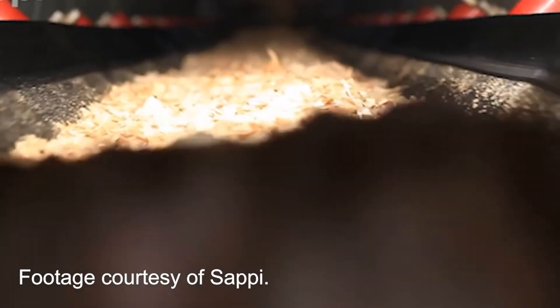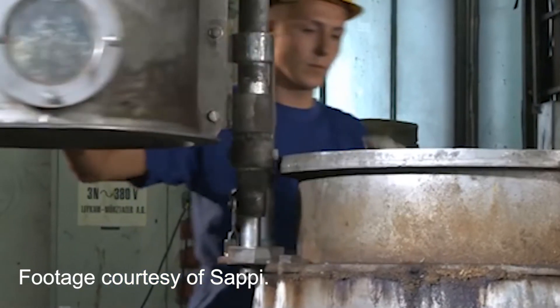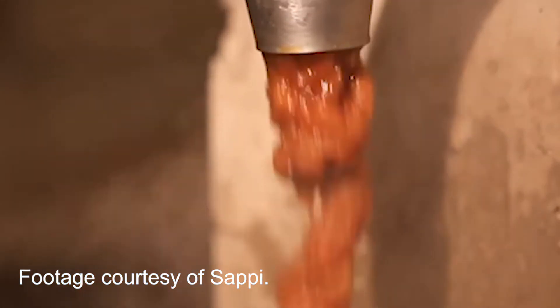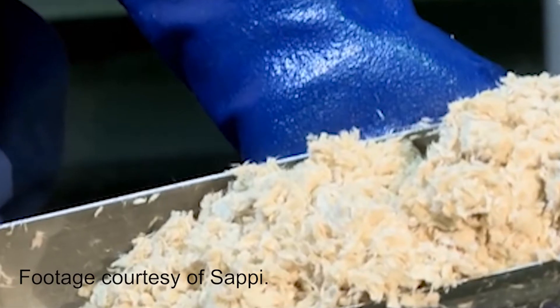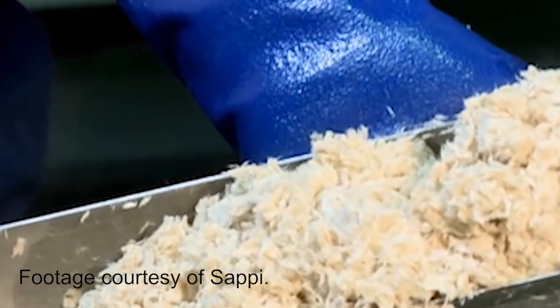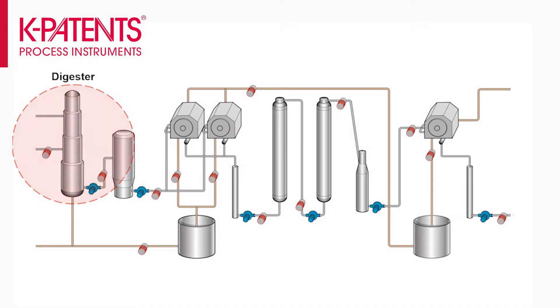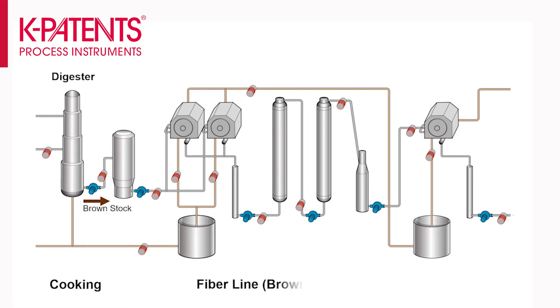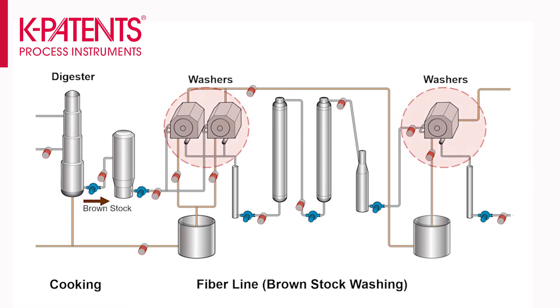To obtain the main component of paper, the wood pulp, wood chips are cooked with a strongly alkaline solution. The product from this cooking process is known as brown stock because of its deep brown color. Before these fibers can be used for papermaking, they need to be washed to remove as much dissolved material as possible and obtain a soft and fibrous pulp which is lighter in color. This process starts in the digester where pulping takes place and the brown stock is produced. Following the cooking, the brown stock moves on to the fiber line where it passes through a series of washers to remove as much dissolved solids from the pulp as possible before it goes to the bleaching plant.